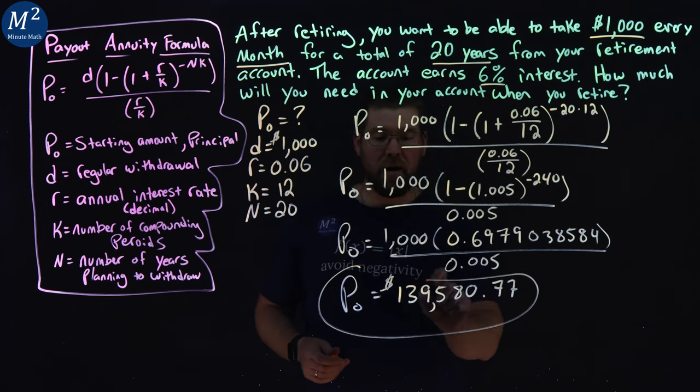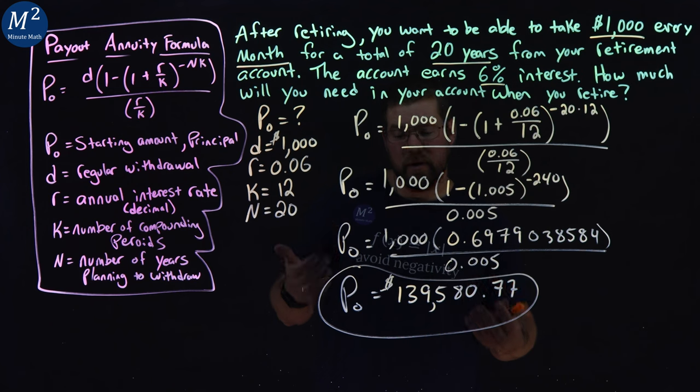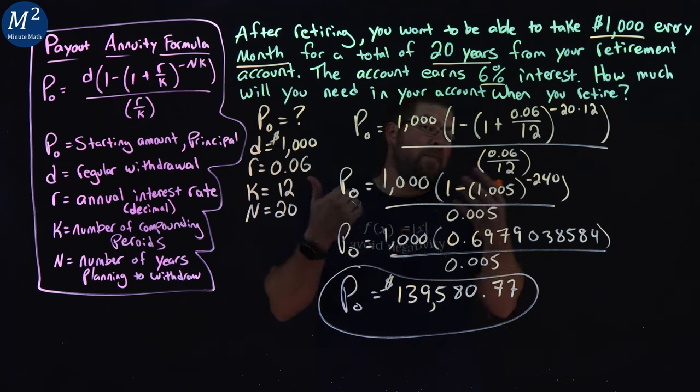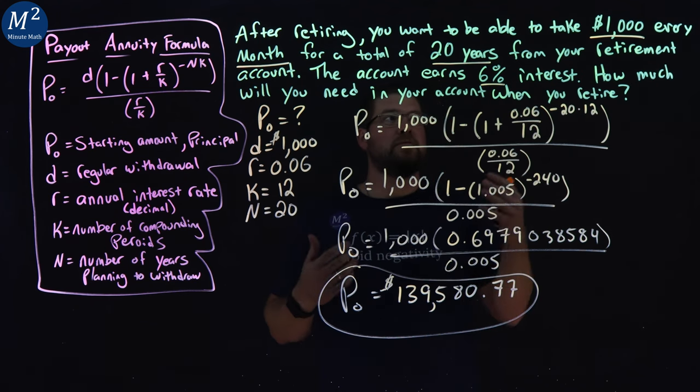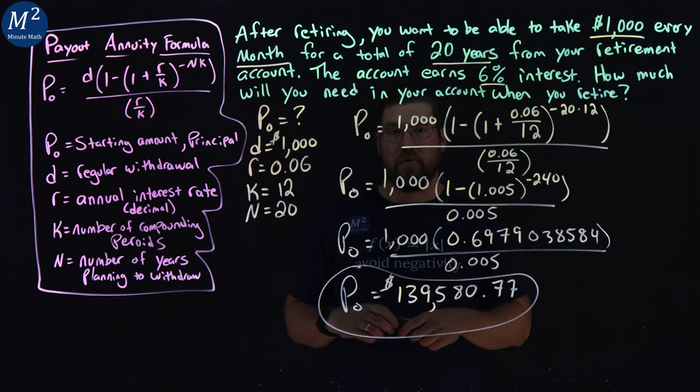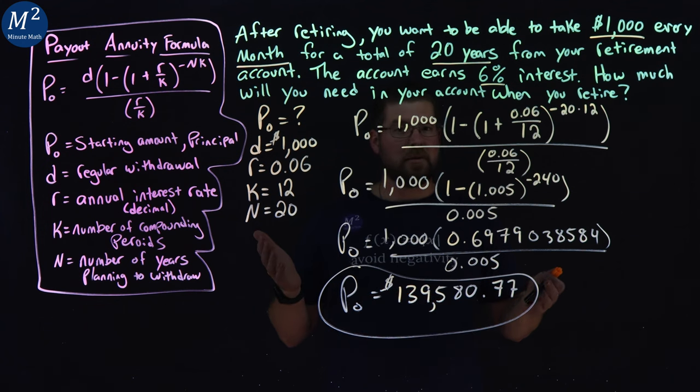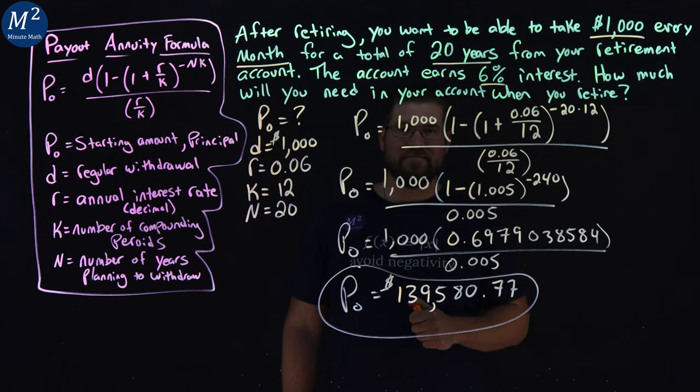And so that amount is how much we have to have in our retirement account when we retire for 20 years to receive $1,000 every month. I hope you learned something here. And as always, thanks for watching.